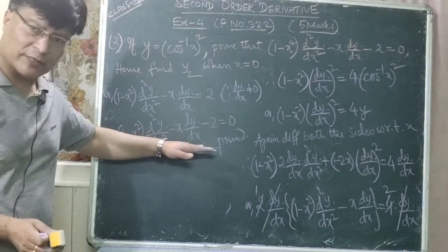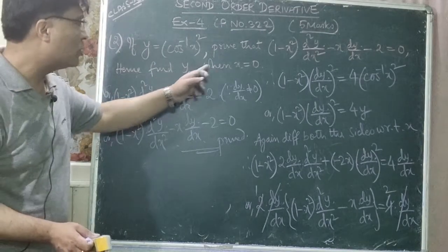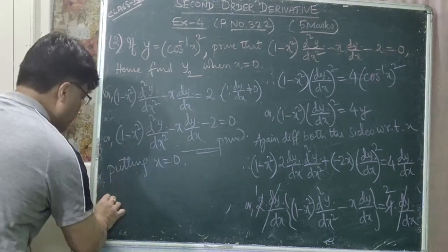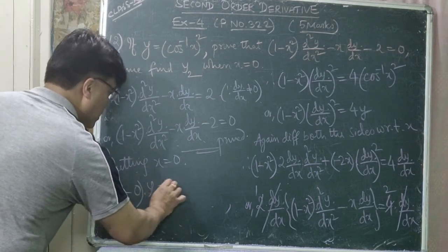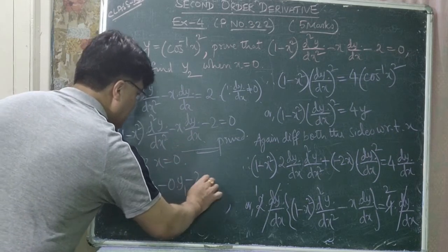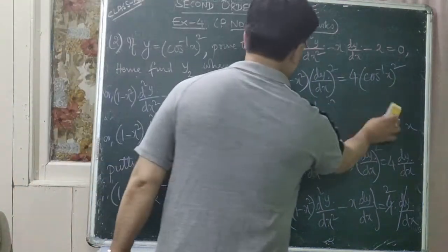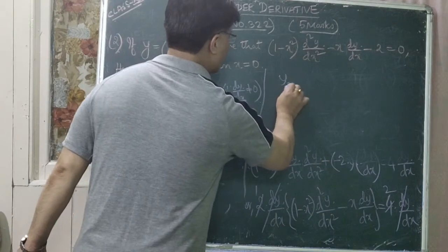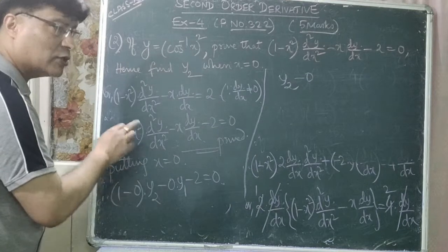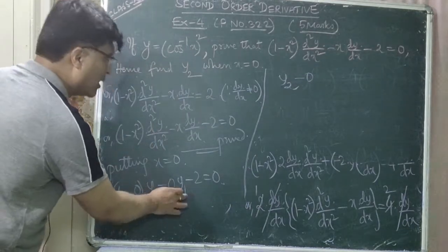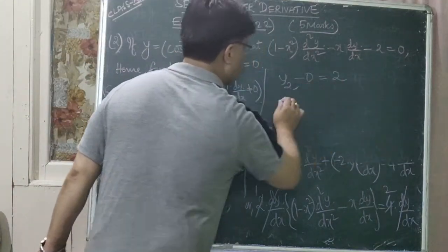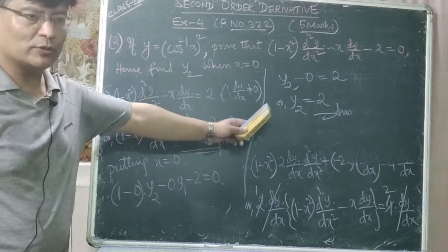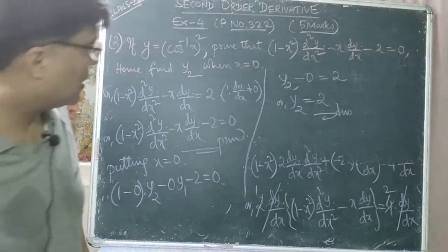For the second part, find y₂ when x = 0. Substituting x = 0 into the proved relation: 1·y₂ − 0·y₁ − 2 = 0, so y₂ = 2. When x = 0, the value of y₂ = 2.